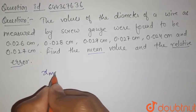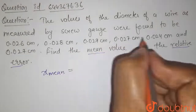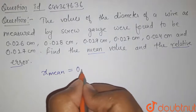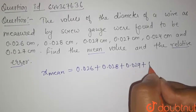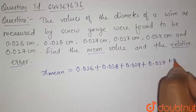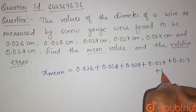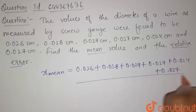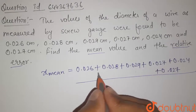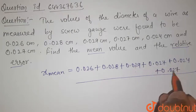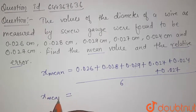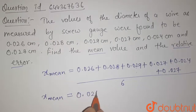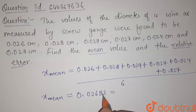First of all, the mean value x̄ is given by the average of all these readings. It will be equal to 0.026 plus 0.028 plus 0.029 plus 0.027 plus 0.026 plus 0.027. There are 6 readings, so we divide by 6. Calculating this, x̄ equals 0.02683, which on rounding off gives 0.027. So this is the mean value.